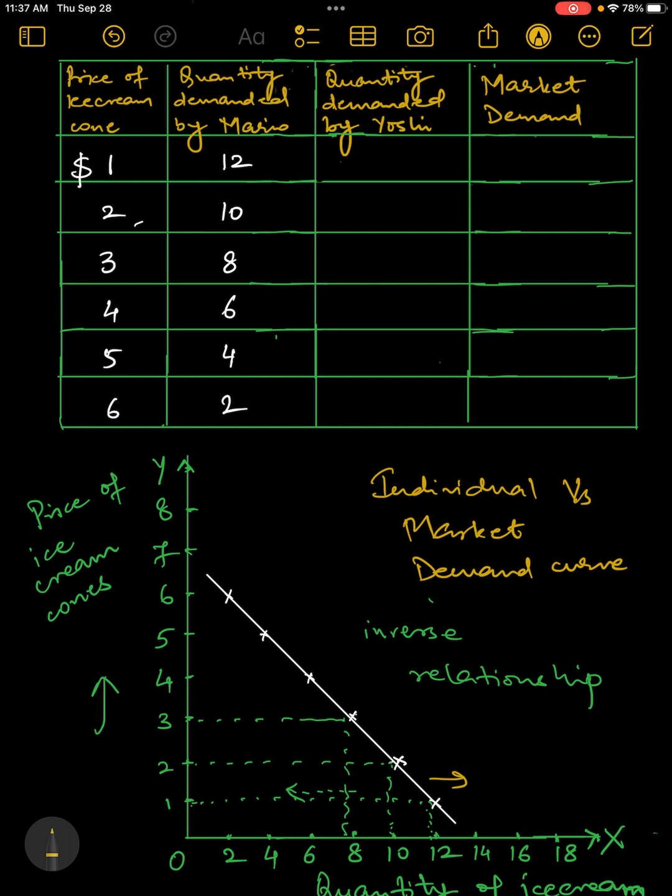So for example, in our same table, if I add amount demanded by Yoshi. So let's say Yoshi demands 6 ice creams when the price is $1. And if the price increases to $2, then 5, 4, 3, 2, 1. So Yoshi's demand pattern is like this. When the dollar price of ice cream is $1, he demands 6 ice creams. And when it goes to $6, he demands 1 ice cream.